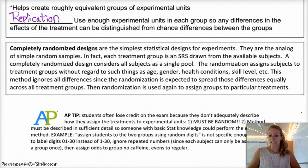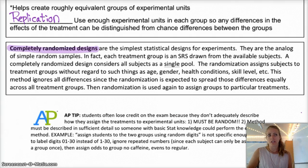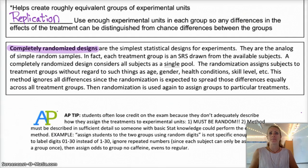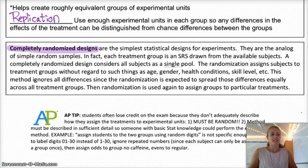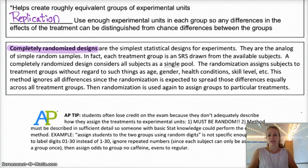The last concept is a completely randomized design. It's important to understand what this means in experimental terminology because a lot of experiments are done this way. In the next video we'll talk about blocking, which is like an organized way to set up your groups — kind of like stratification. A completely randomized design for an experiment is basically the equivalent of a simple random sample when you're sampling.